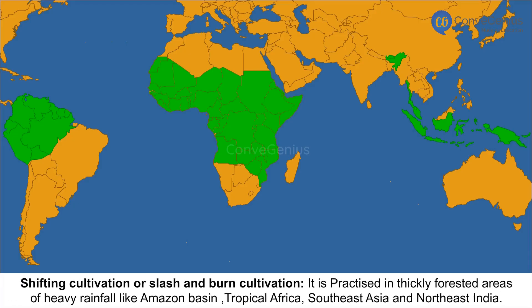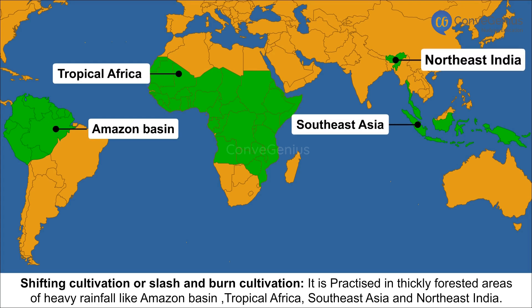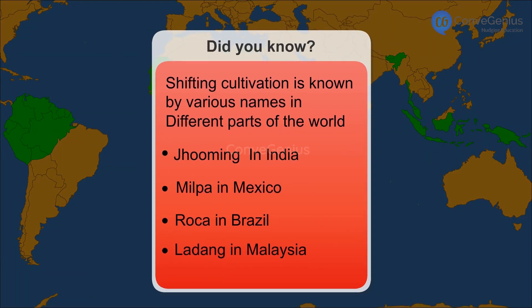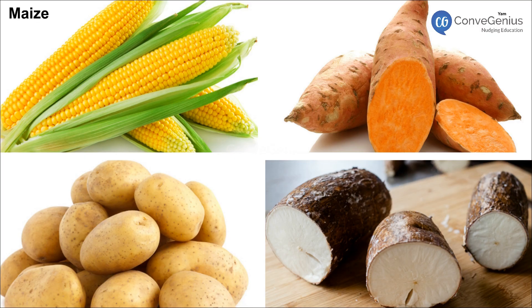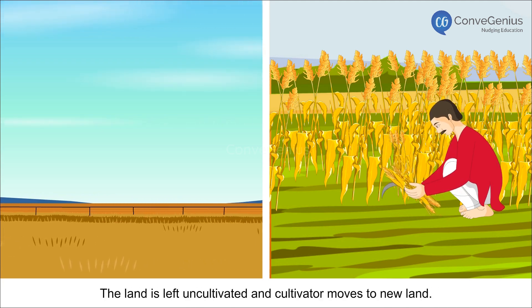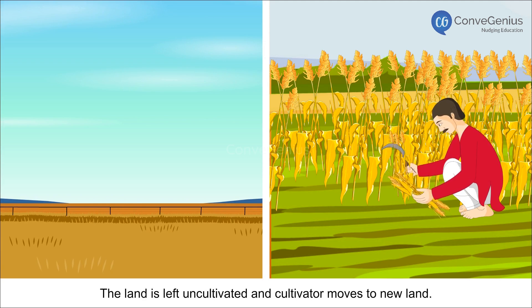Shifting Cultivation, also known as Slash and Burn Cultivation, is practiced in thickly forested areas of heavy rainfall like the Amazon Basin, Tropical Africa, Southeast Asia and Northeast India. Land is cleared by felling and burning the trees. Ashes are then mixed into the soil. Crops such as maize, yam, potatoes and cassava are grown. After the soil loses its fertility, the land is left uncultivated and the cultivator moves to new land.